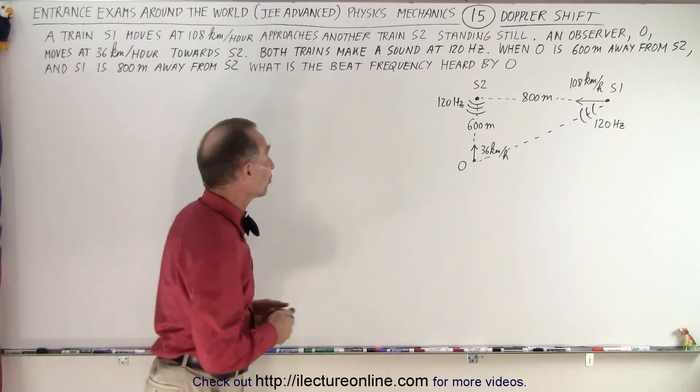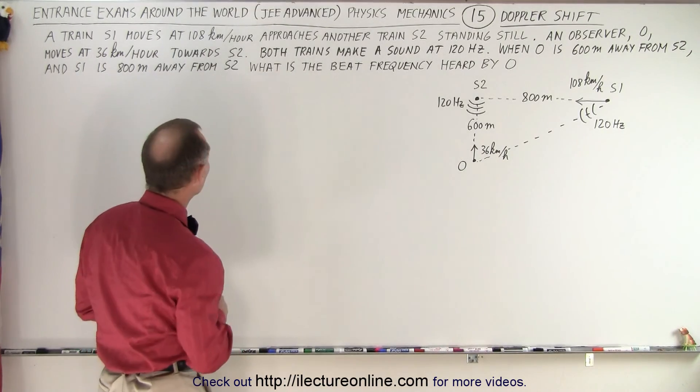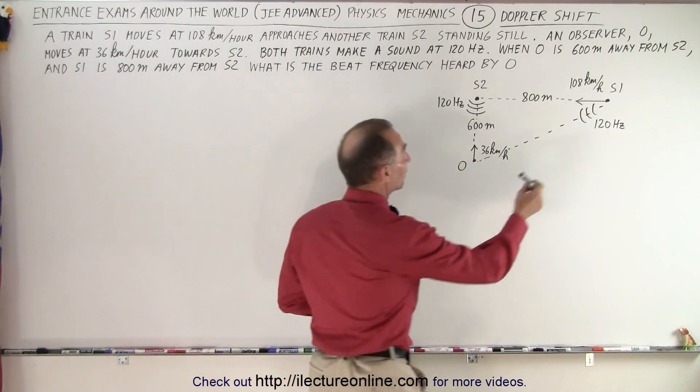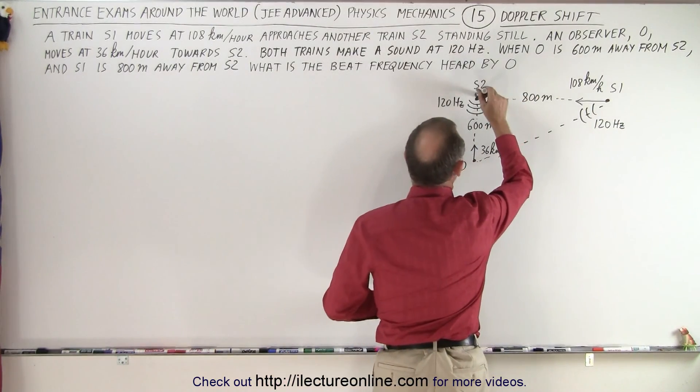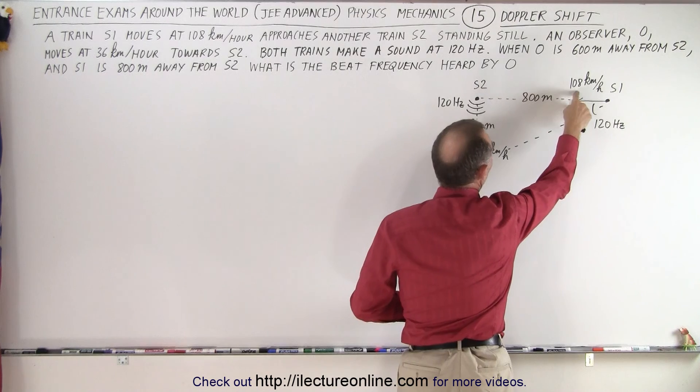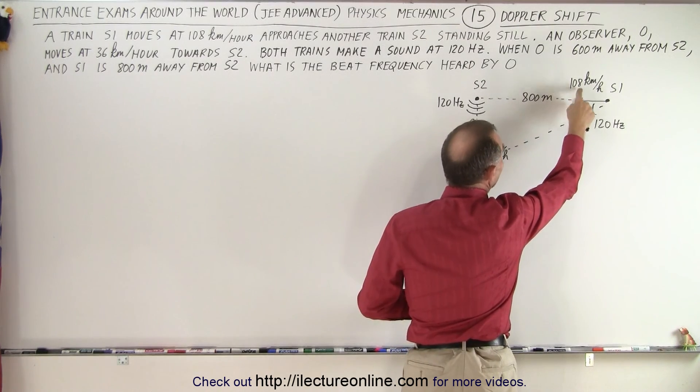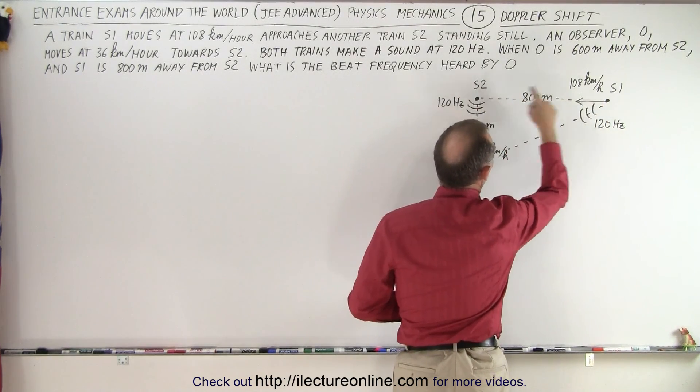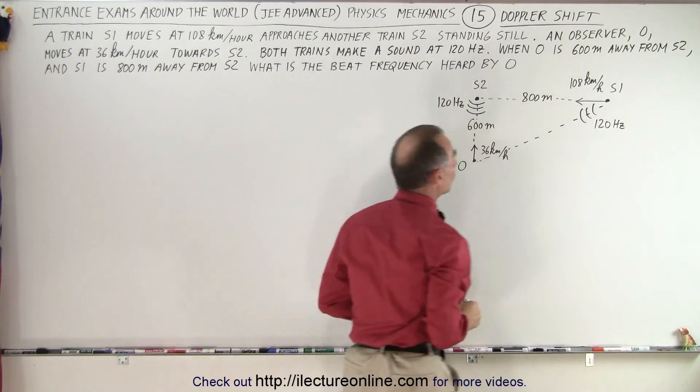So what is the question? We're dealing with two trains and an observer. We have one train, S1, that's moving towards the stationary train S2 at 108 kilometers per hour, and at one moment it is 800 meters away.